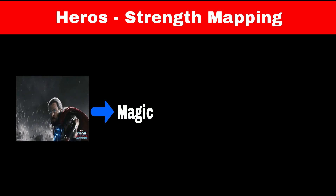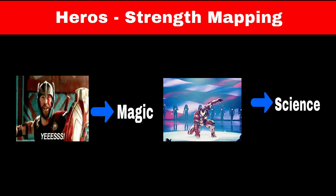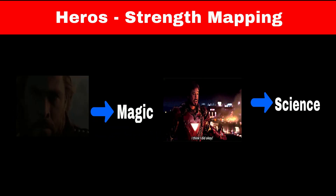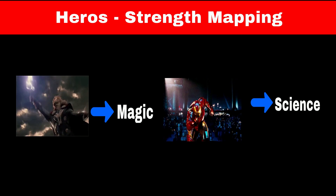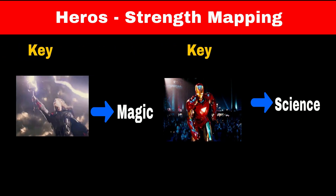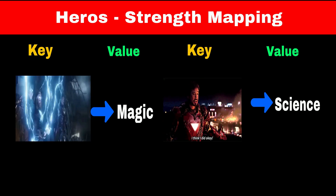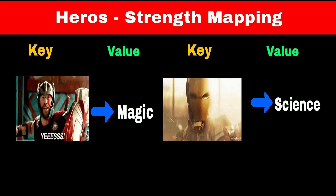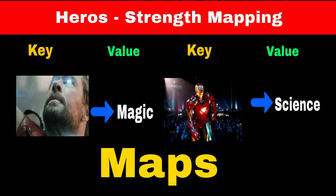For example, Thor's strength is magic and Iron Man's strength is science. This structure that Jarvis has used for mapping key-value pairs — where the key is the superhero's name and the value is their strength — is called a map in programming.